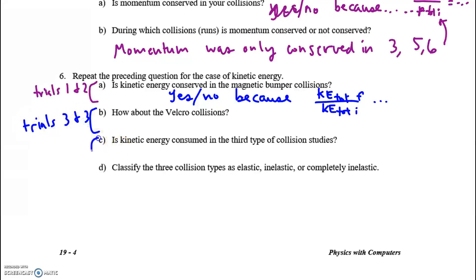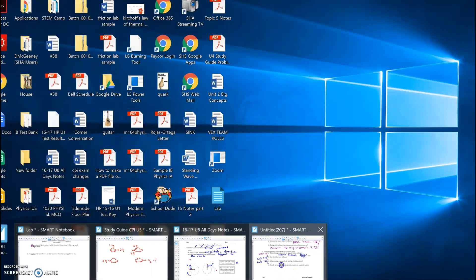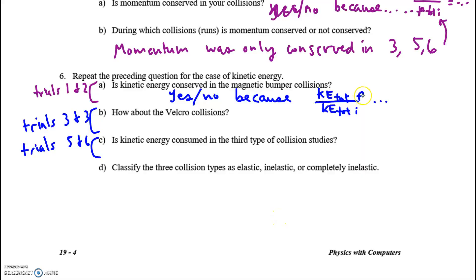And then look at trials three and four. The sticky Velcro. And then, for part C, look at trials five and six. Right? And for all three of these, you're talking about that ratio. You're talking about that ratio of total final kinetic energy to total initial.